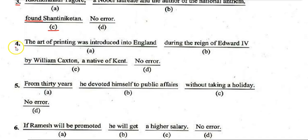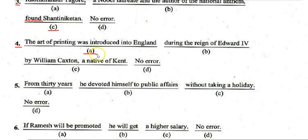Next question: 'The art of printing was introduced into England during the reign of Edward Ford by William Caxton, a native of Kent.' The error is in section A — it should be 'introduced in England,' not 'into England.'